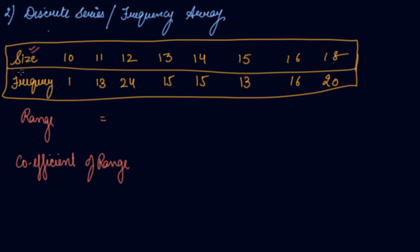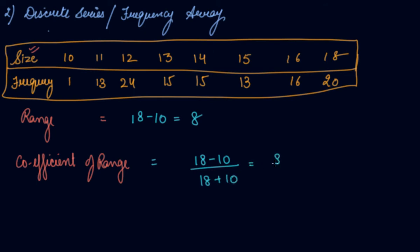You take the series and find the highest and lowest of the series to calculate the range. The highest is 18 and the lowest is 10, so 8 is your range. The coefficient of range is 18 minus 10 divided by 18 plus 10, which is 8 divided by 28, equal to 0.29. This is how you calculate the range in case of discrete series.